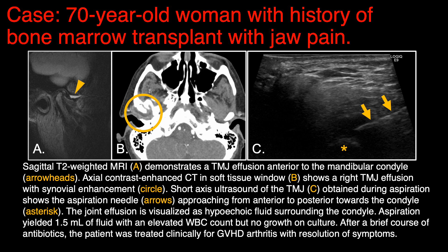One more case — a 70-year-old woman with a history of bone marrow transplant and ongoing immunosuppression who presented with jaw pain. Image A shows a sagittal T2 fat-suppressed MRI image with a small amount of joint fluid in the right temporomandibular joint. Image B is a contrast-enhanced CT in the axial plane with a small joint effusion. Image C shows ultrasound-guided aspiration, where we can see the mandibular condyle indicated by the asterisk, the surrounding hypoechoic joint effusion, and a needle approaching from anterior to posterior indicated by the arrows. Aspiration yielded 1.5 milliliters of fluid with an elevated white blood cell count but was culture negative. The patient was given a diagnosis of graft-versus-host disease-related arthritis and treated with steroids with clinical resolution of symptoms.